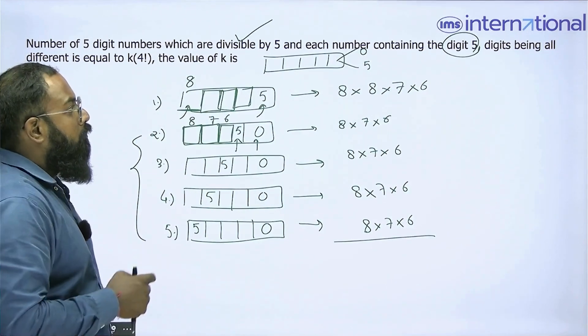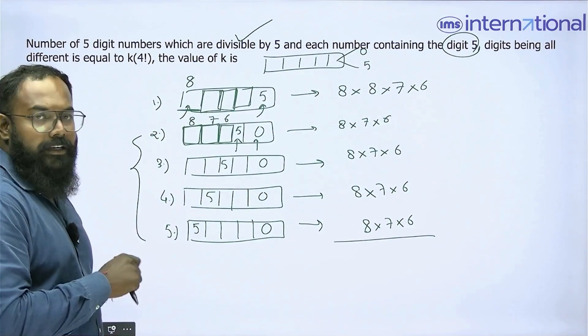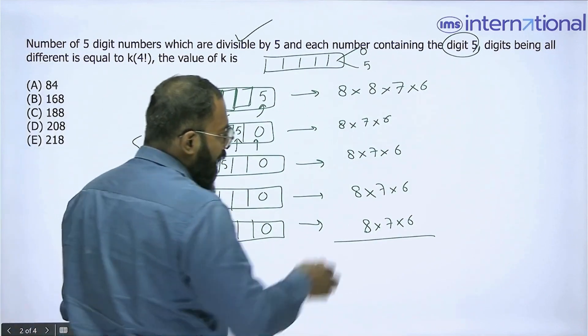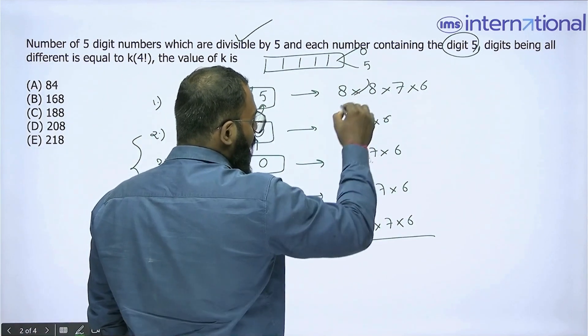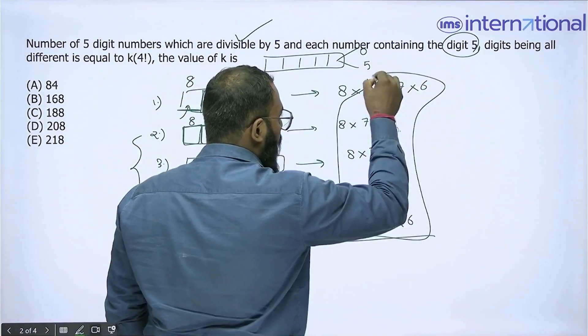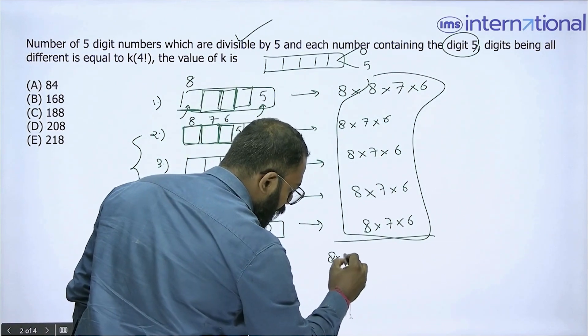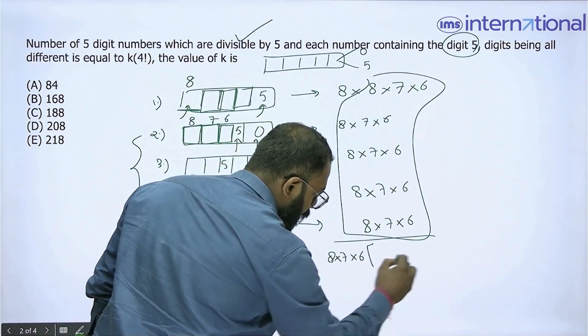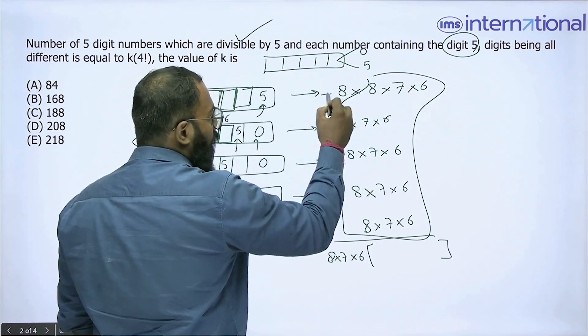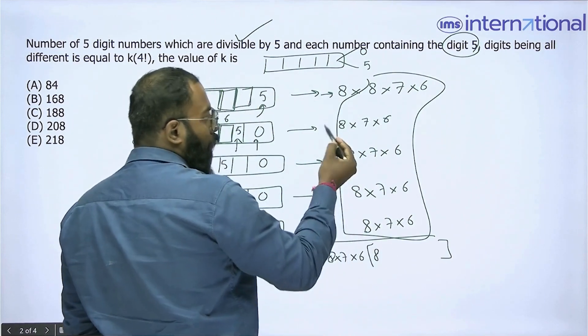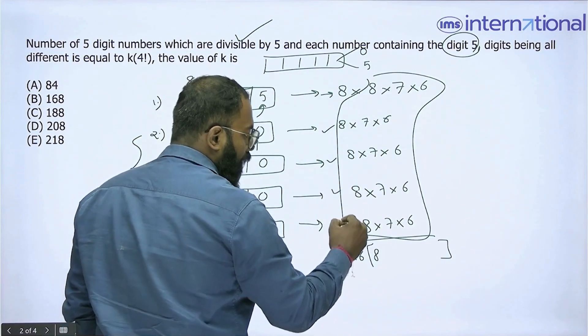These are the number of ways in which a 5-digit number can be made which is divisible by 5 and also has a 5 as its digit. If I add all of them, I can see that 8 × 7 × 6 is common. I have 8 over here and four 1s - 1, 2, 3, and 4.